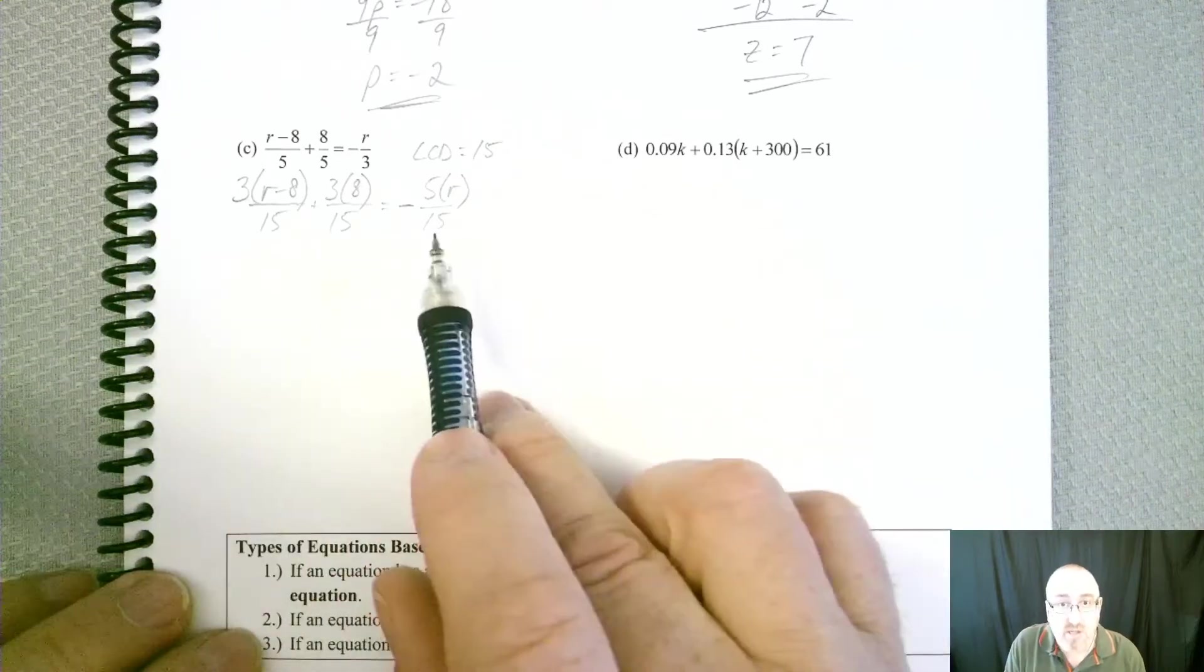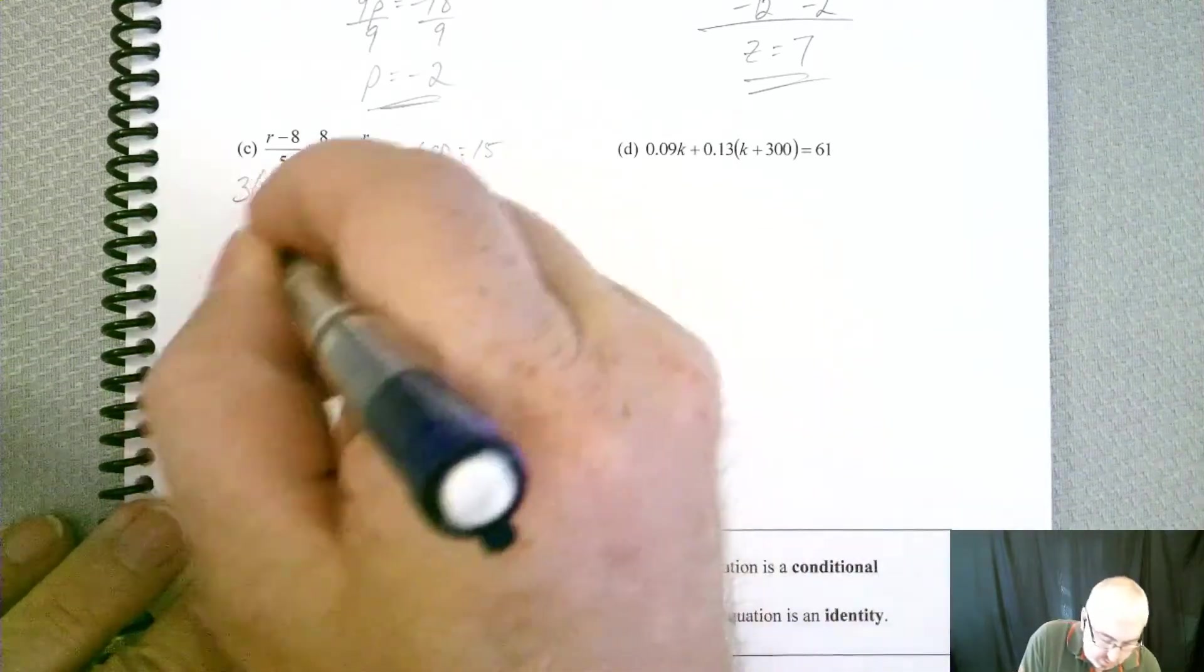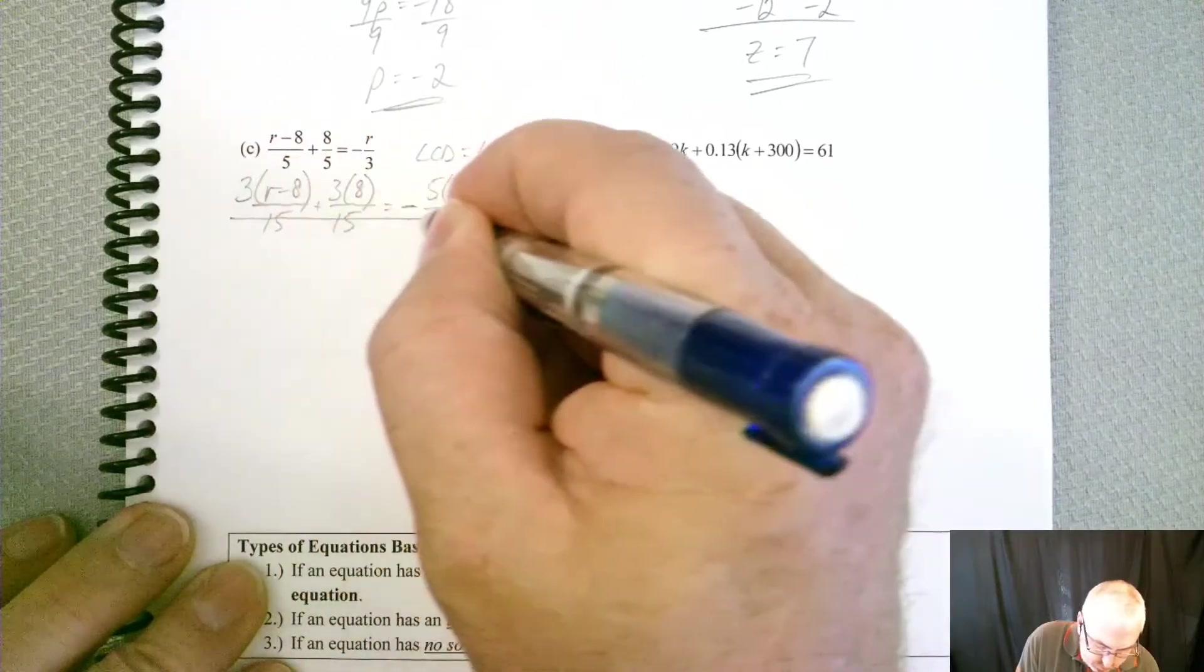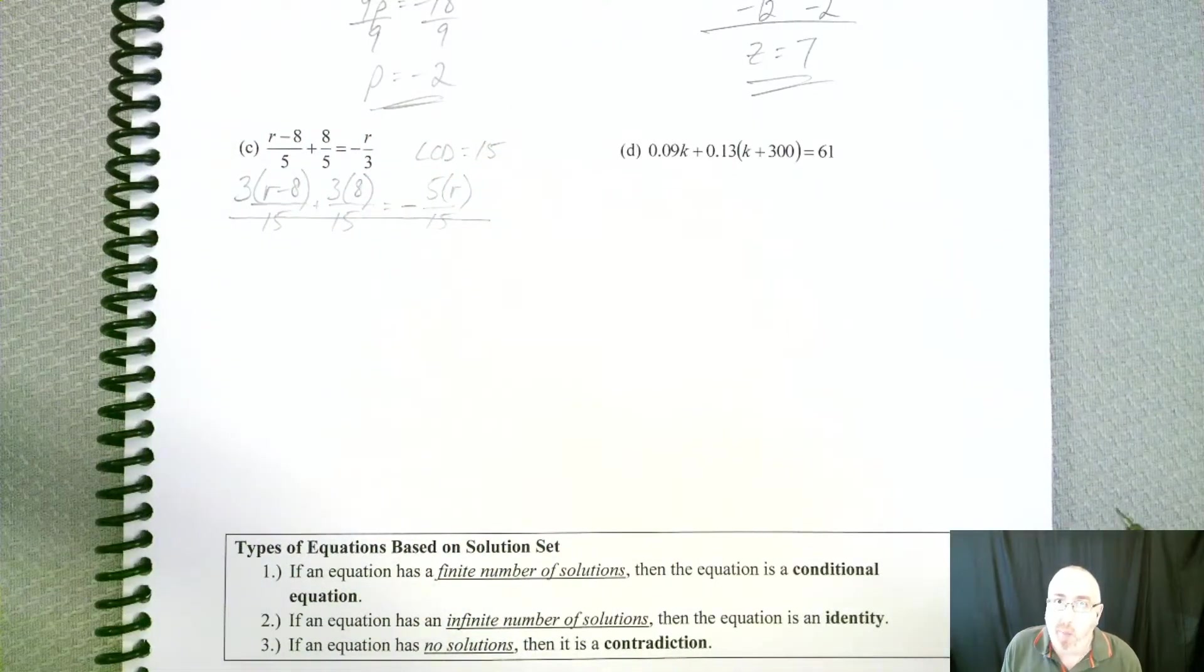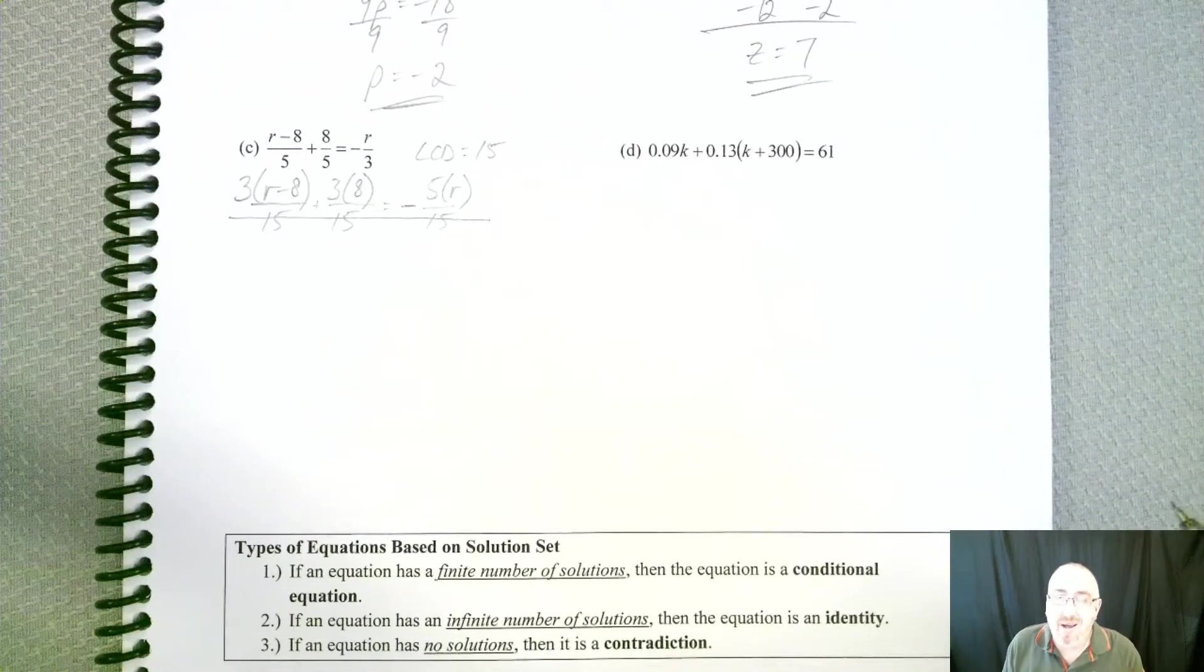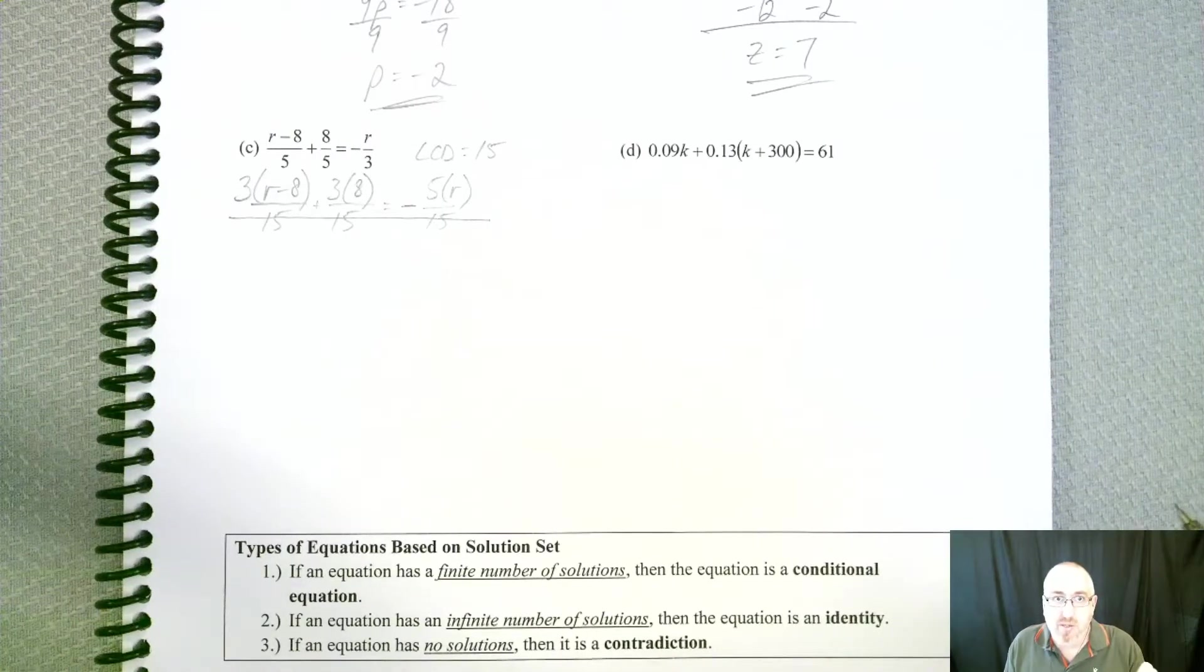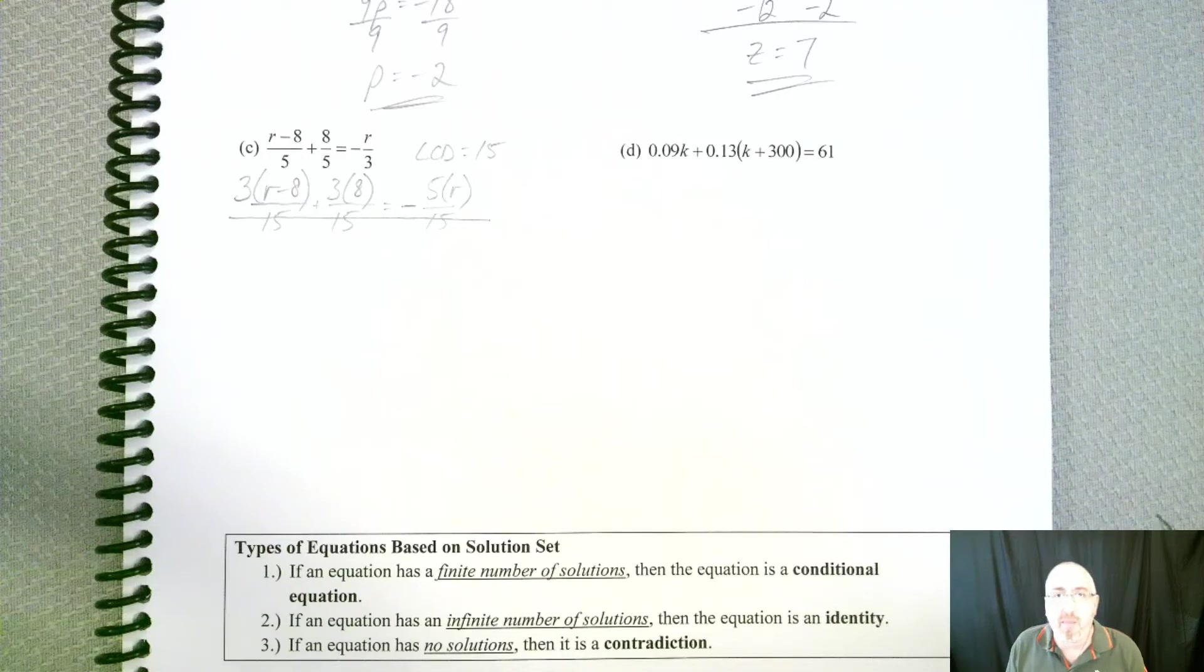Here's the fun part. Now that all the denominators are the same, I can do this. I can just cross them right out. Now you're probably saying, well, why? Why couldn't I do that?